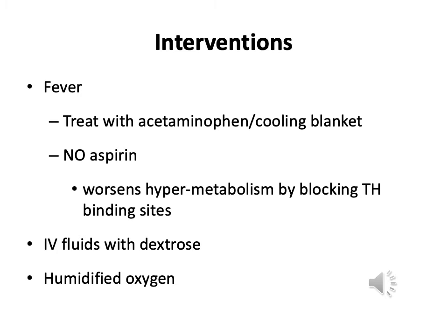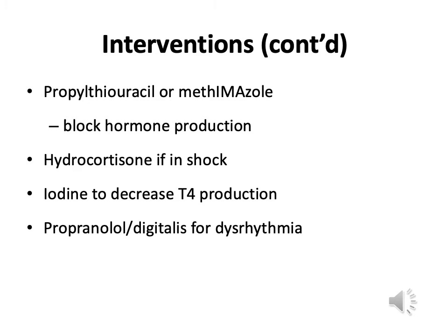Interventions for thyroid storm: do not give aspirin, as it worsens hypermetabolism by blocking thyroid hormone binding sites. Give dextrose, humidify the oxygen, and treat fever with Tylenol and a cooling blanket. Administer antithyroid medications to block thyroid hormone production. Give hydrocortisone if the patient is in shock. Treat with iodine to decrease T4 production, and address dysrhythmias appropriately.